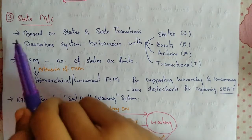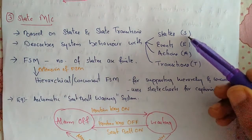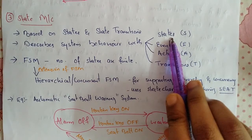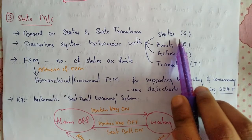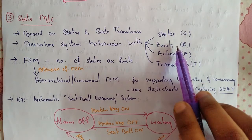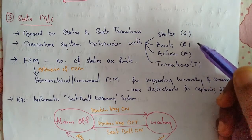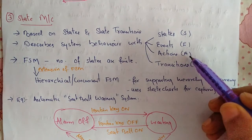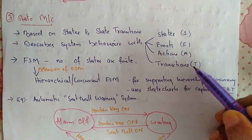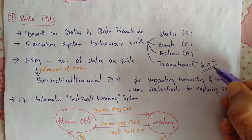Next is state machines. It is based on states and state transitions, and it describes the system behavior with states, events, actions, and transitions. A state is a representation of a current situation. An event is an input to the state that acts as a stimulus for state transition. An action is an activity performed by the state machine. A transition is the movement from one state to another.